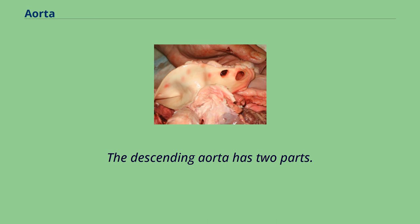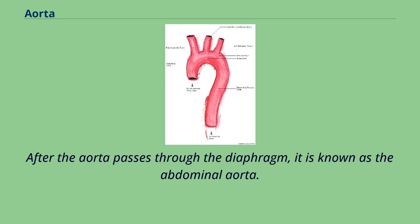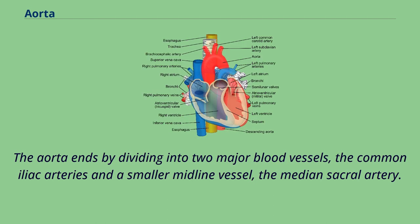The descending aorta has two parts. The aorta begins to descend in the thoracic cavity and is consequently known as the thoracic aorta. After the aorta passes through the diaphragm, it is known as the abdominal aorta. The aorta ends by dividing into two major blood vessels, the common iliac arteries, and a smaller midline vessel, the median sacral artery.